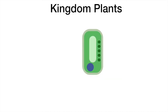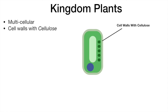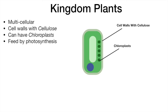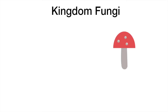All plants are multicellular but they have cell walls made of cellulose and can contain chloroplasts. They feed by photosynthesis and can have roots, leaves and stems.